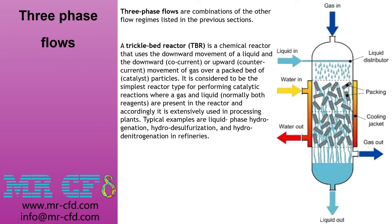The final category belongs to three-phase flow, which is basically a combination of all common phases — gas, solid, and liquid. This is a type of multiphase flow not commonly seen in nature, but it has a large number of applications in industry. An example is the trickle-bed reactor, a chemical reactor that uses the downward movement of liquid and the downward or upward movement of gas over a packed bed of catalyst particles. It is considered the simplest reactor type for performing catalytic reactions where gas and liquid are both reagents, and it is extensively used in processing plants. Typical examples are liquid phase hydrogenation, hydrodesulfurization, and hydrodenitrogenation in refineries.